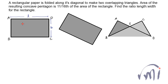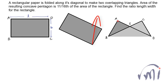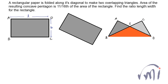We fold it along the diagonal. So here we have a pentagon A, B, D, C, E which is a concave pentagon because diagonal AC is outside the pentagon. Here we have two overlapping triangles. When we fold the paper, we will have triangle A, B, D and triangle C, B, D overlapping each other.